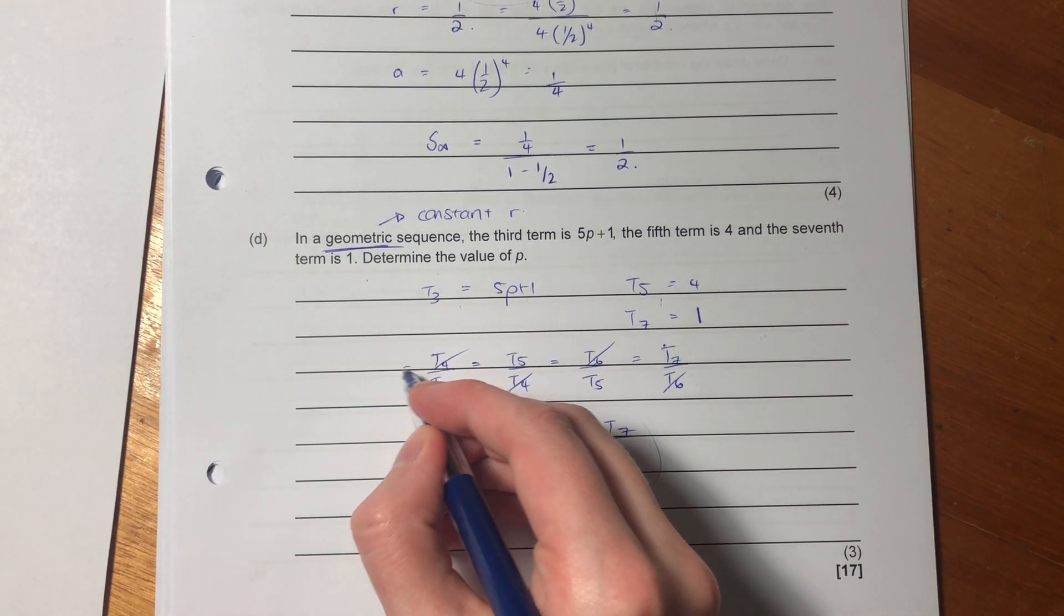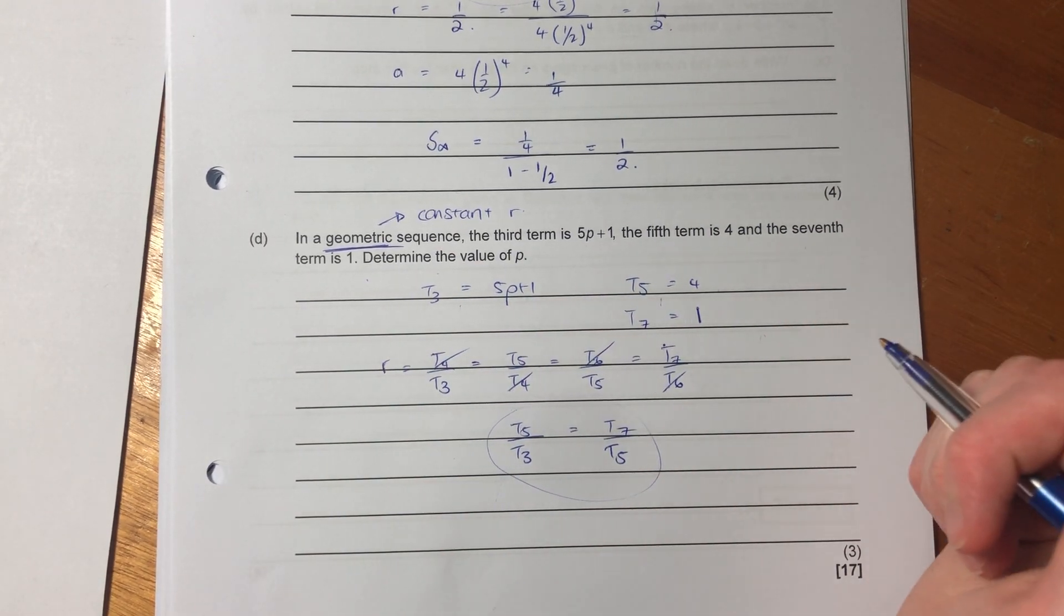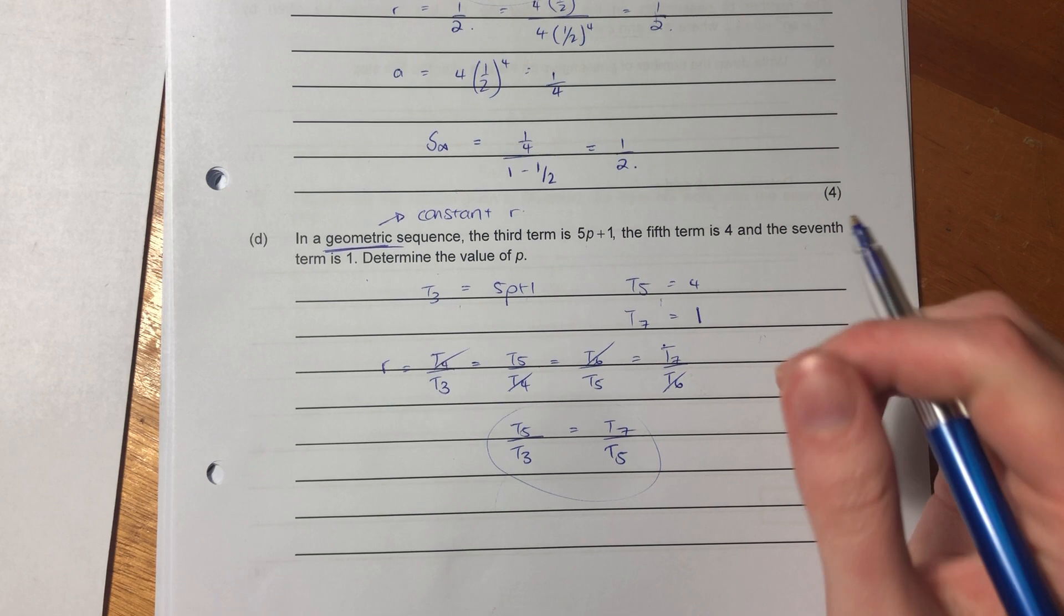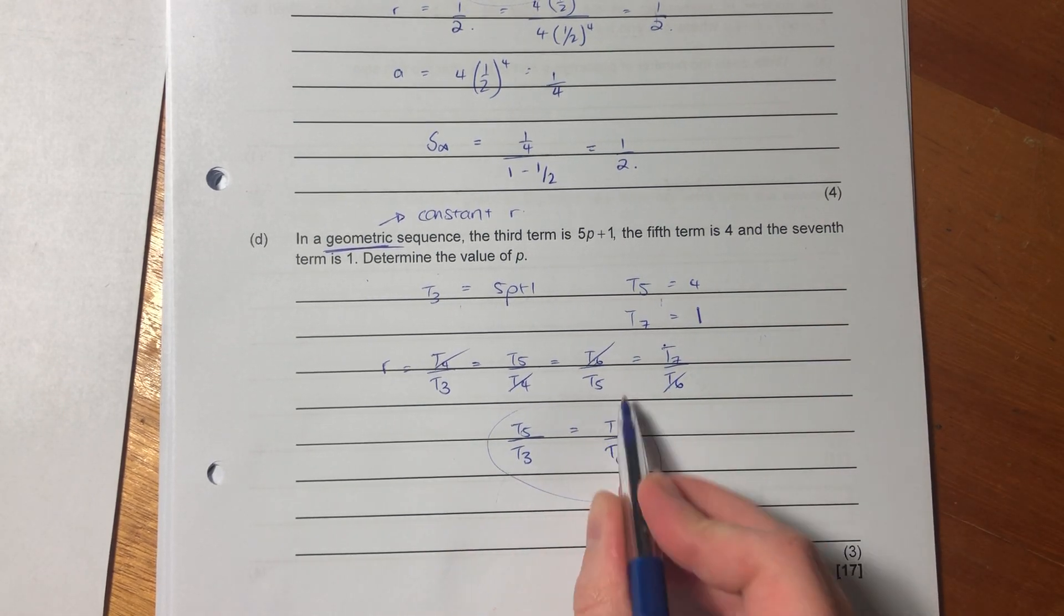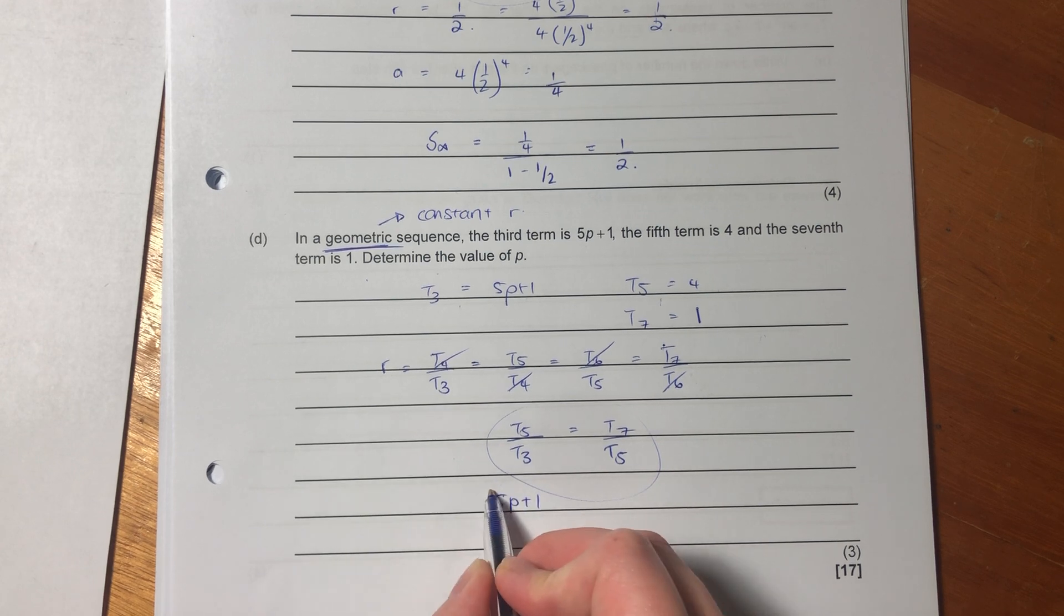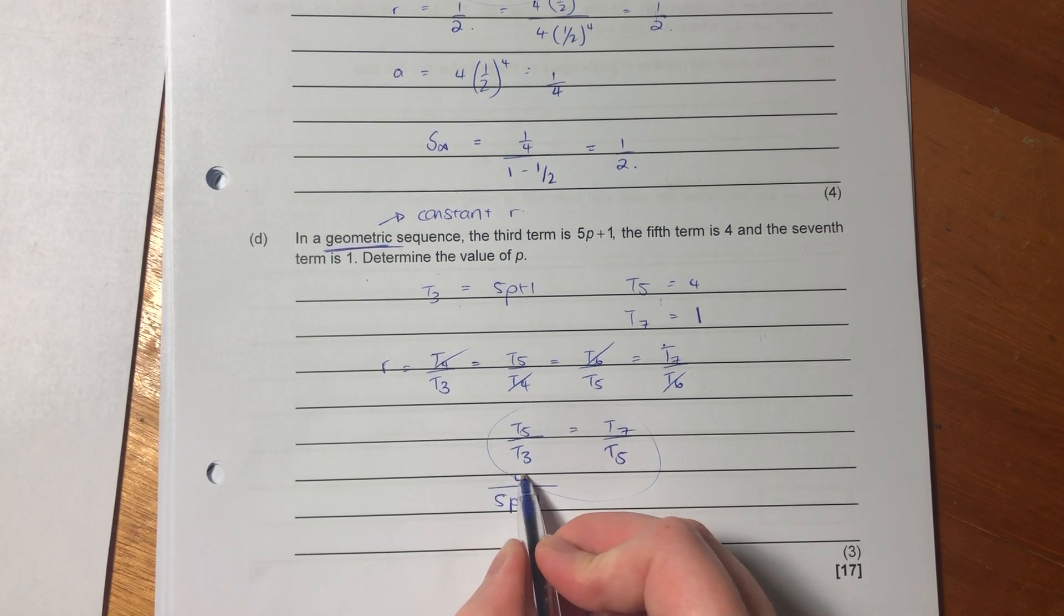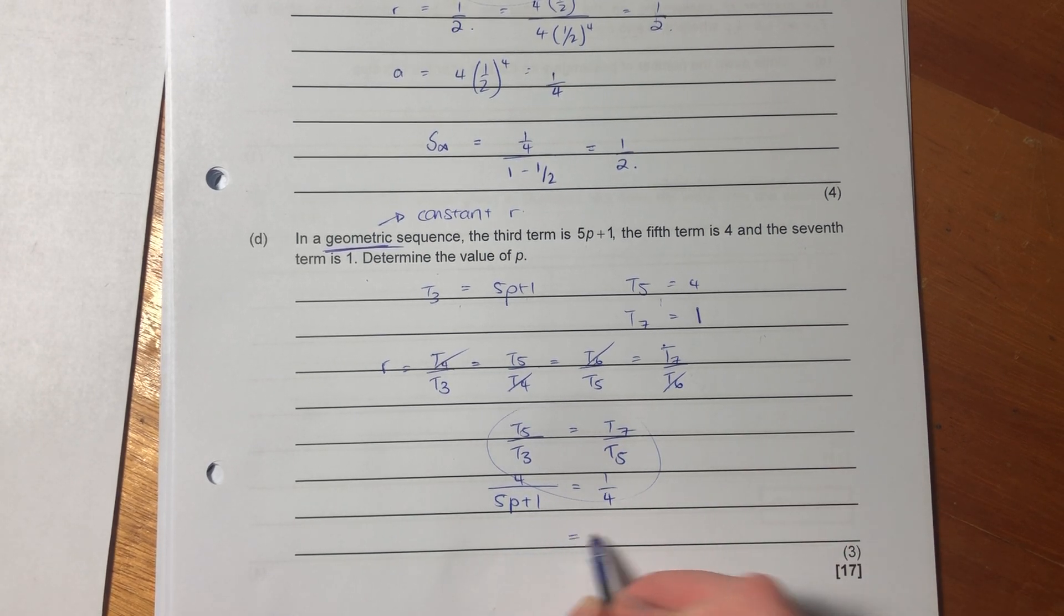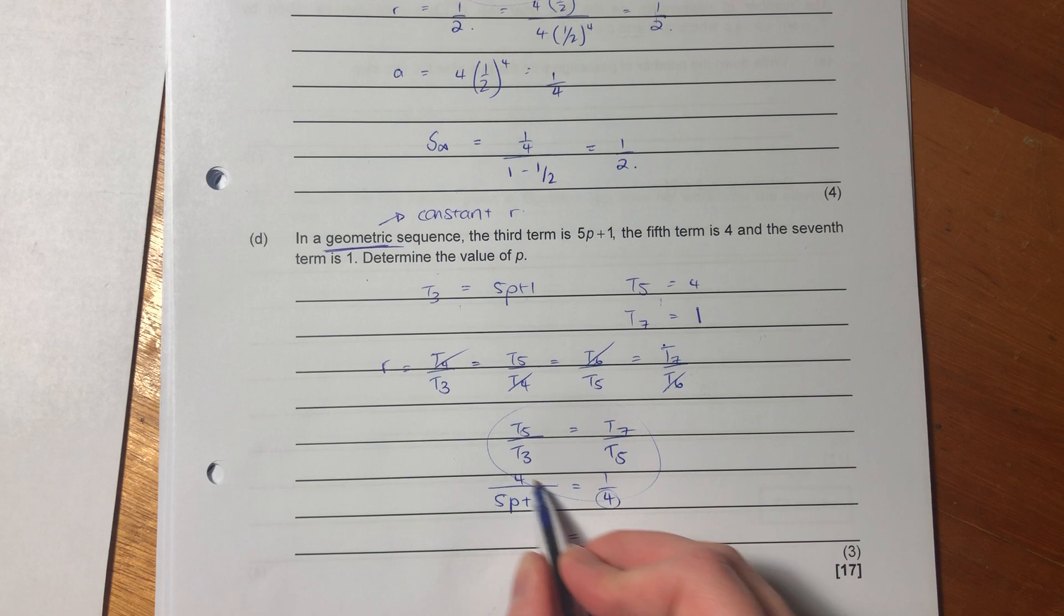So we've basically just given ourselves a way to solve this, given what we have. And what this is demonstrating is that you understand the characteristics of a geometric sequence. And that is very, very important. Now we just sub it in. So we say 5P plus one. Sorry. That's the denominator. So it should be four. And that should be that way.